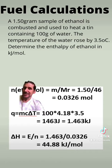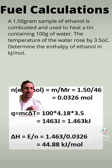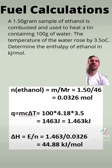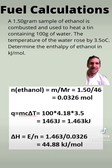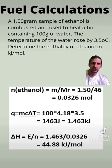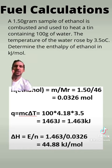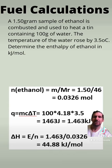So the energy is equal to the mass times the specific heat capacity of water, which is 4.18, times our temperature change. The temperature change was 3.5 degrees Celsius. The key with this is that the energy in this equation comes out as joules, so I need to convert that from joules into kilojoules.